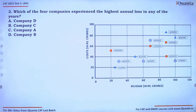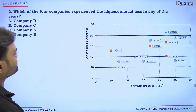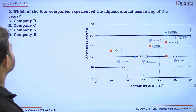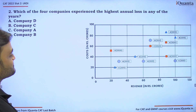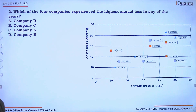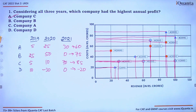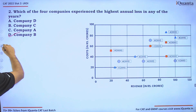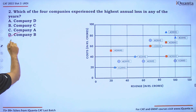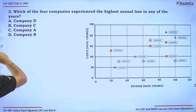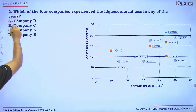Question two asks: which of the four companies experienced the highest annual loss in any of the years? From the previous table, it is clearly company D, which is option A.